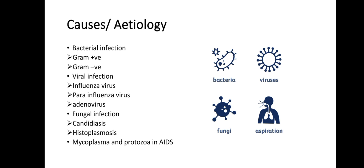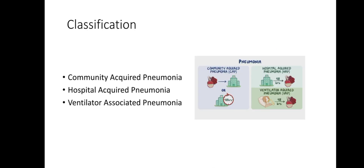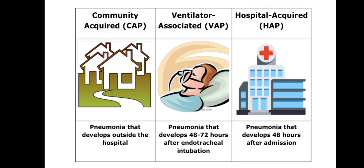Bacterial infections include gram-positive and gram-negative organisms. Viral infections include influenza virus, parainfluenza virus, and adenovirus. Fungal infections include candidiasis and histoplasmosis, as well as mycoplasma and protozoa. For classification, there are three basic types: community acquired pneumonia (CAP), hospital acquired pneumonia (HAP), and ventilator acquired pneumonia (VAP).